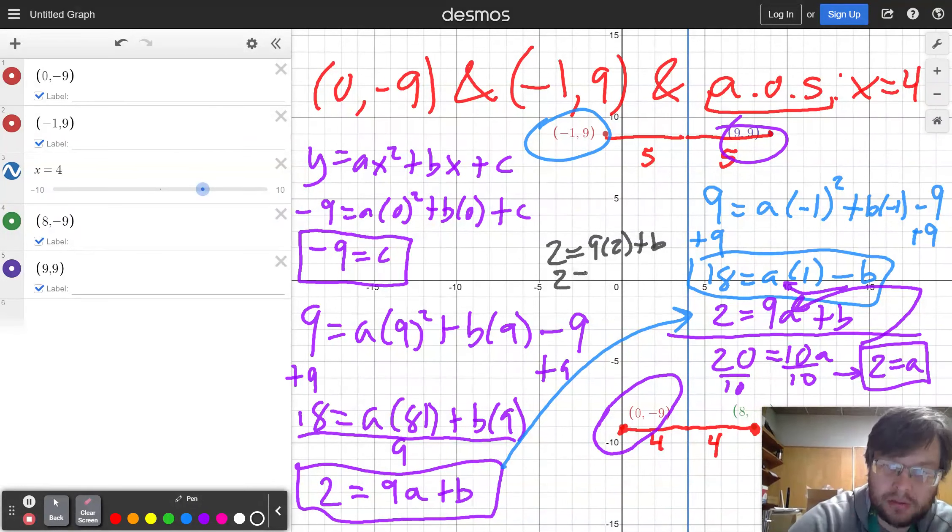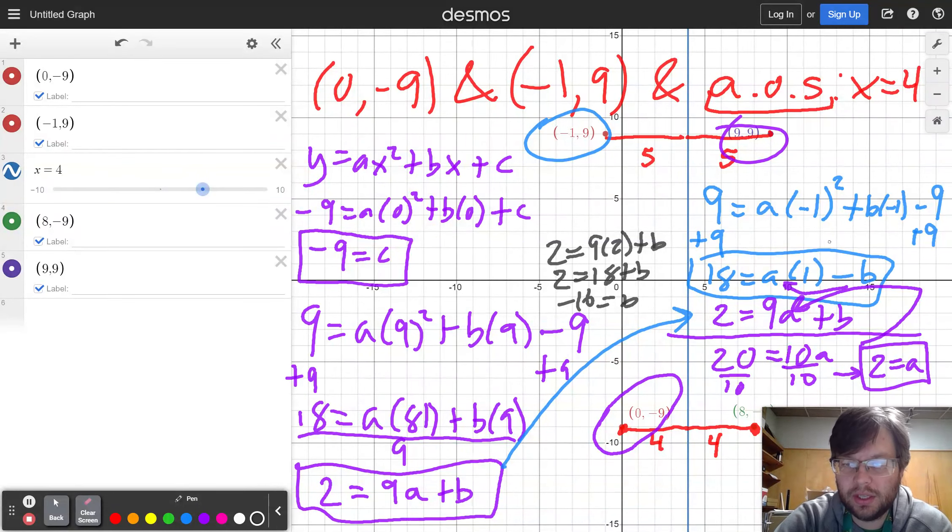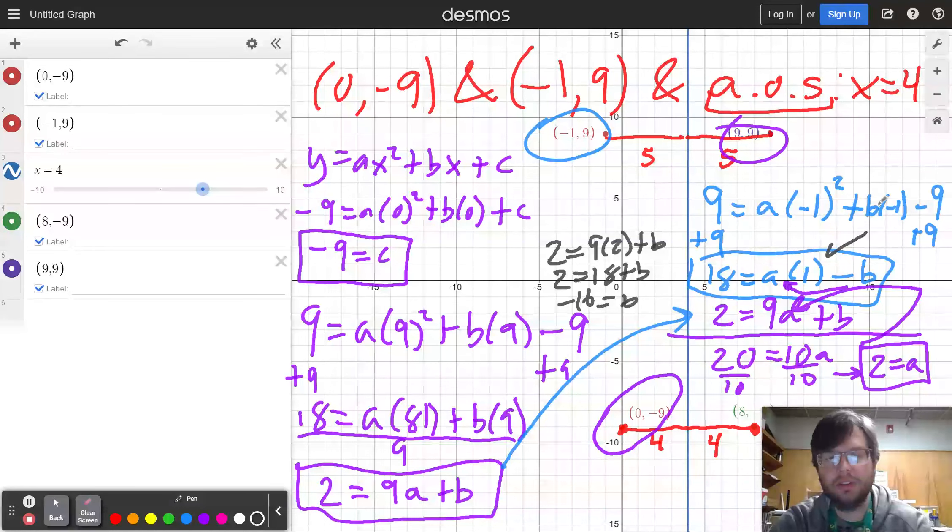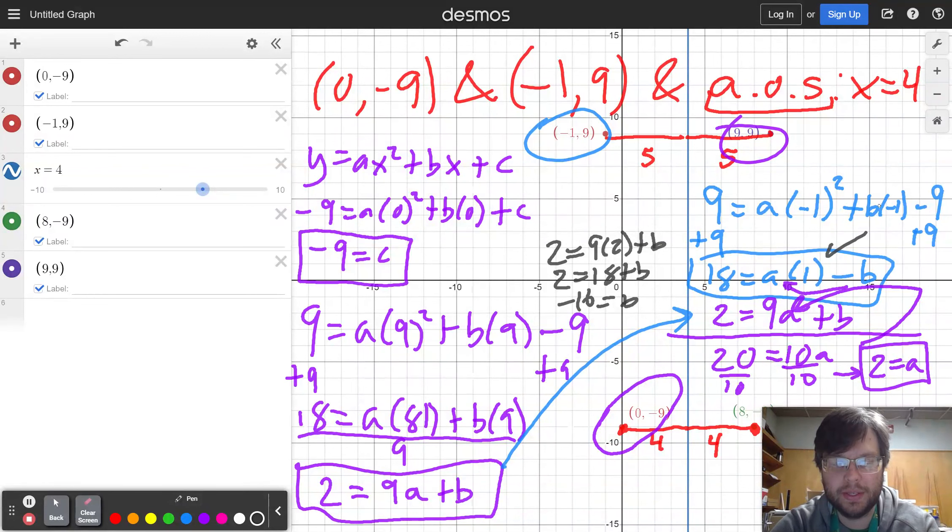So b is negative 16 by subtracting 18 from both sides. Double check and that works out with my blue equation as well. Works out with all the equations.